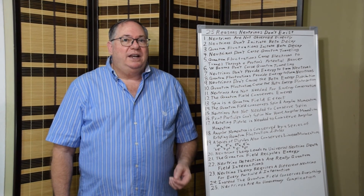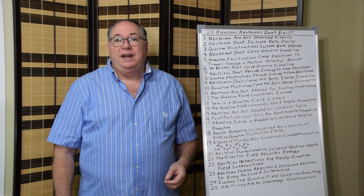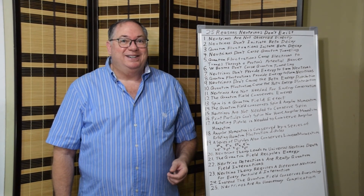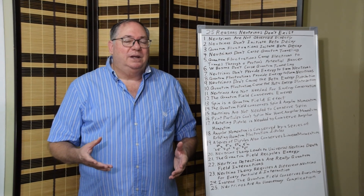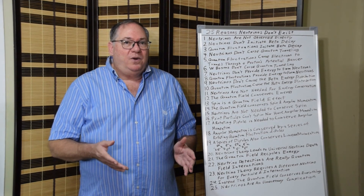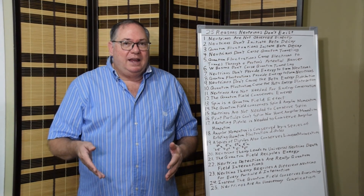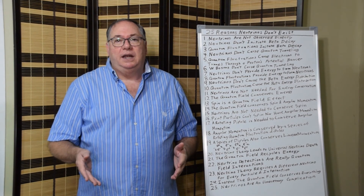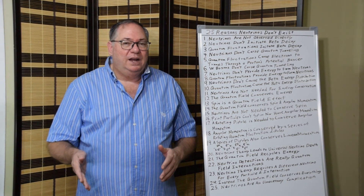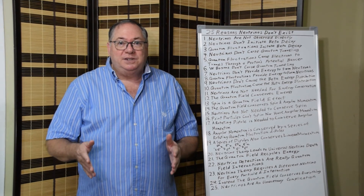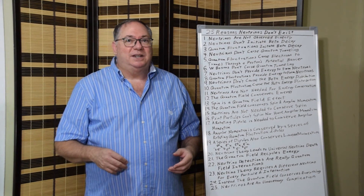Two, neutrinos don't initiate beta decay. And three, quantum fluctuations initiate beta decay. That was the problem with Pauli's assumption. Pauli said the energy of the beta electron varies over a range instead of being at the fixed maximum, so they have to account for that range of energy. Why is there a range, and what happened to the rest of it? They said a neutrino carries away the rest of it.